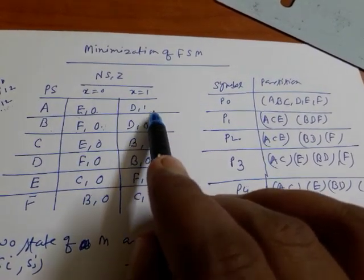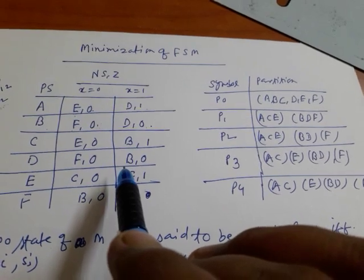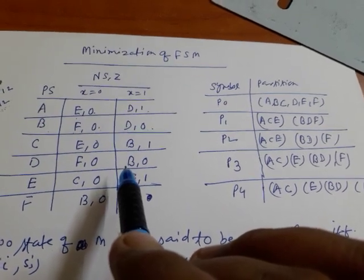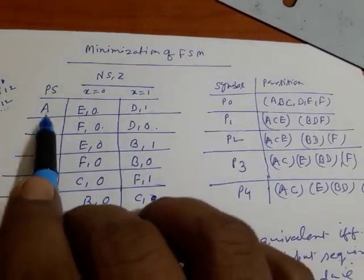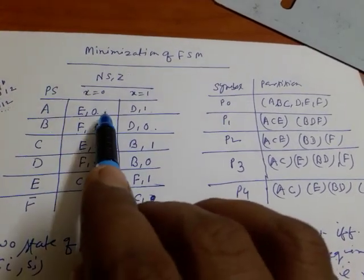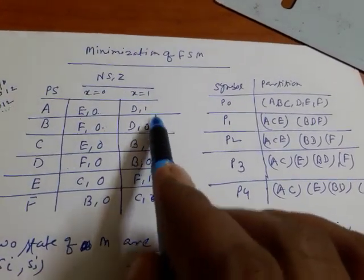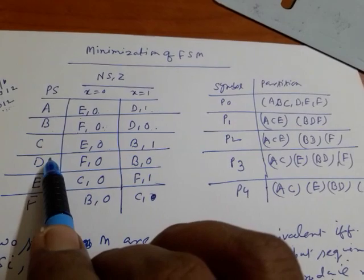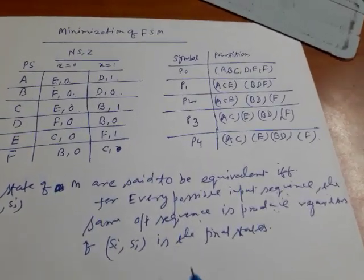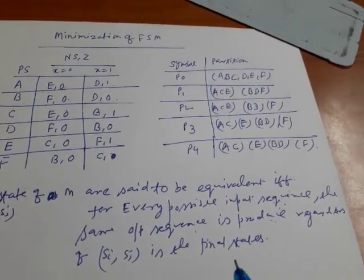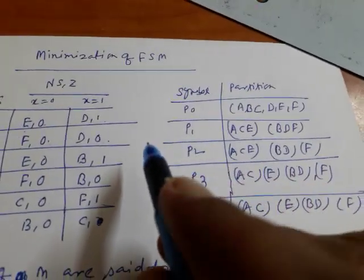So I can say that a and b are not equivalent, because for input 0 they produce the same output, but for input 1, one produces 1 and the other produces 0. However, if I consider states a and c — for inputs 0 and 1 they produce the same outputs — so a and c are equivalent.